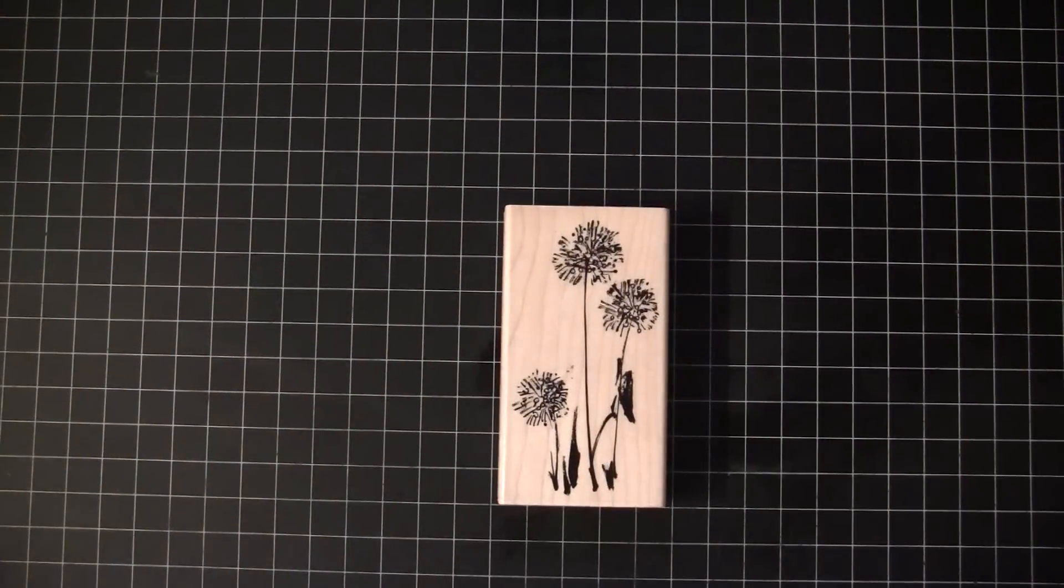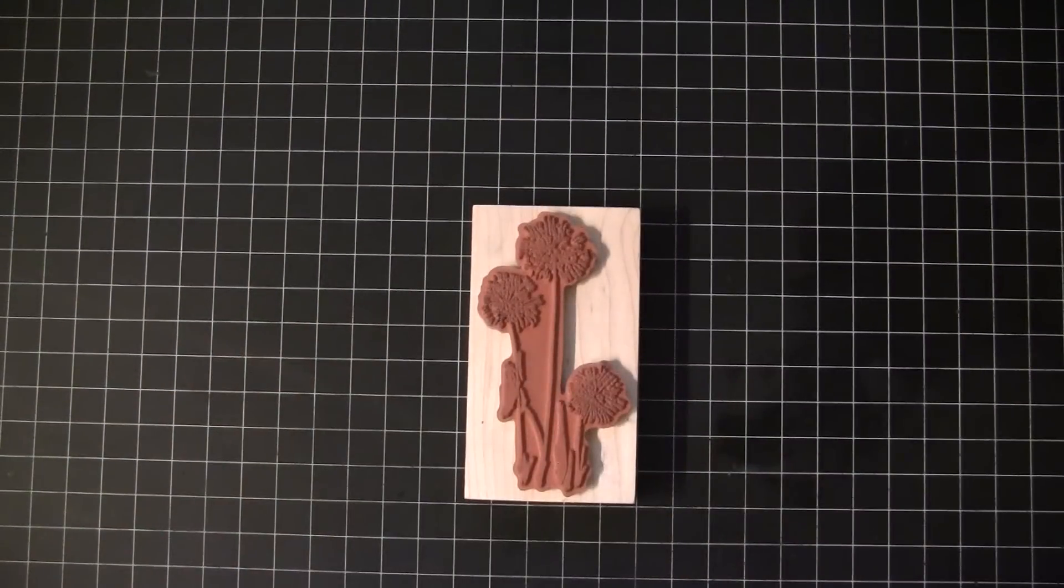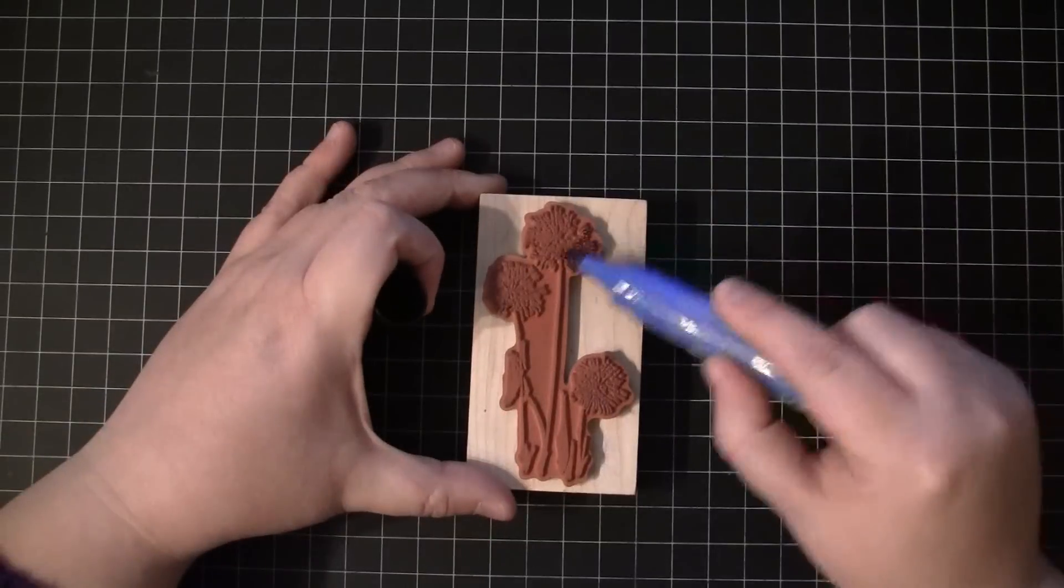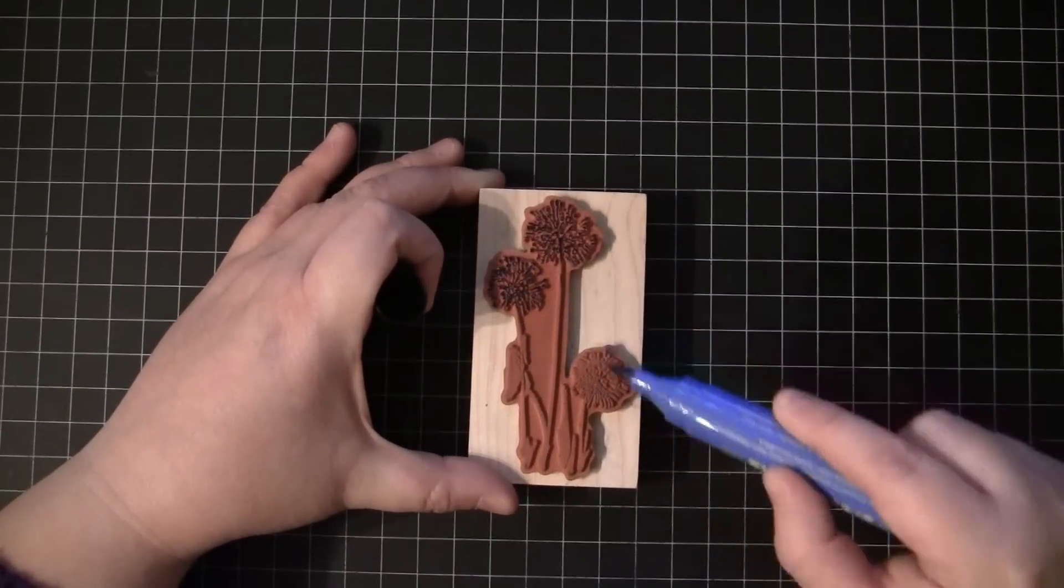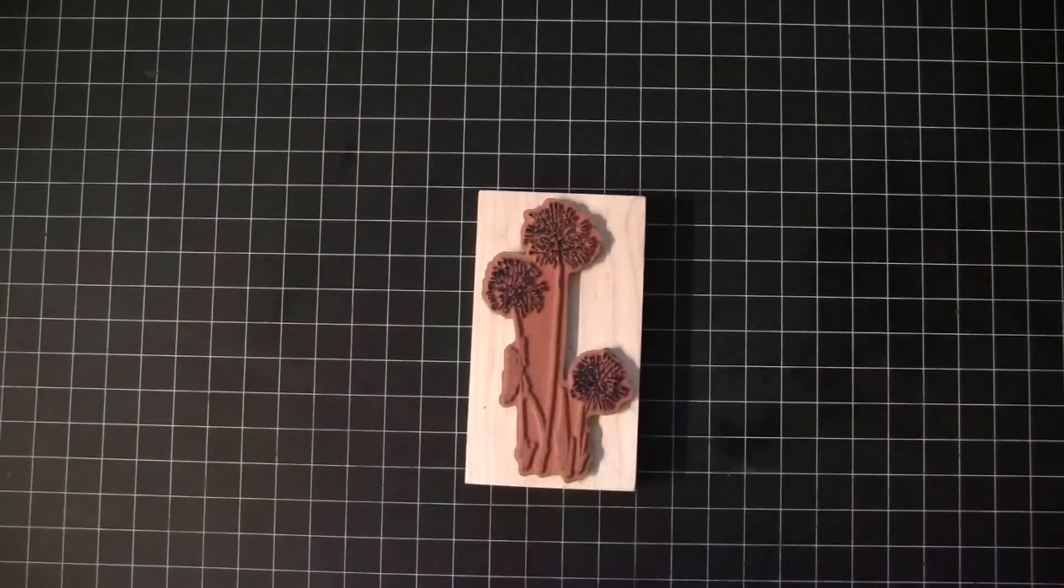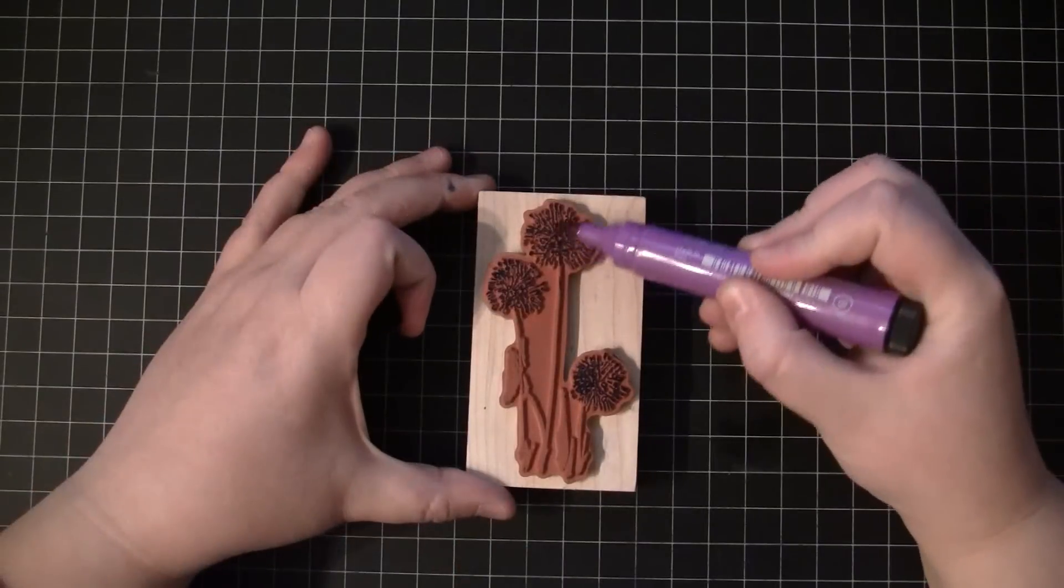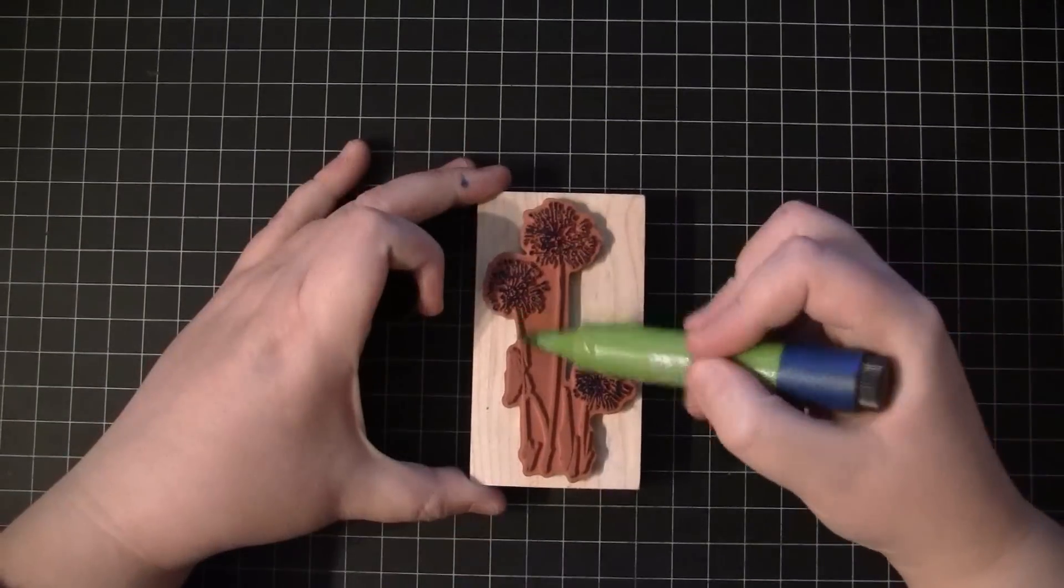I'll follow the same procedure with the next two stamps. So I'm coloring onto the stamp, and the nib of the markers is very sturdy, so I kind of just turn it to the side and color with that nib.